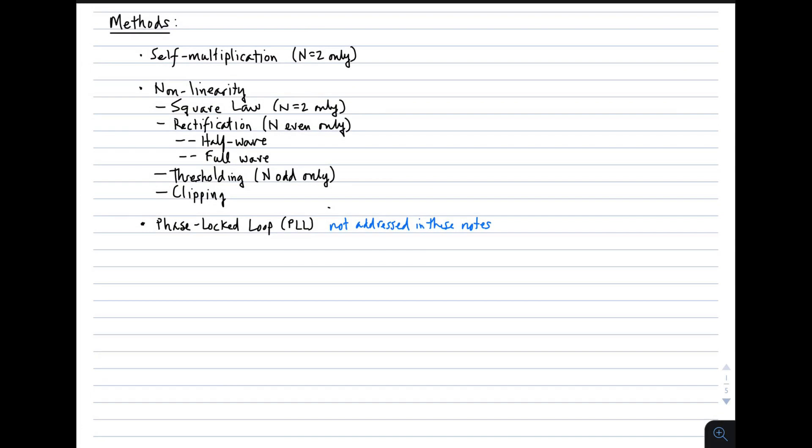Here are some methods for frequency multiplication, some of which I'll discuss in detail here, and others which I will not. One is self-multiplication. That is multiplying the signal by itself. We'll see that that gives you n equals 2. In other words, that will double the frequency, but that's about all it will do.